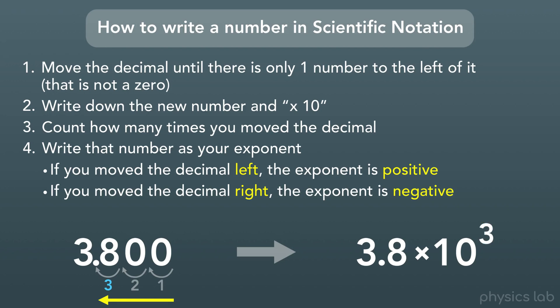And this makes sense because we learned that positive exponents are used for numbers larger than one, and negative exponents are used for numbers smaller than one. And 3,800 is definitely larger than one.